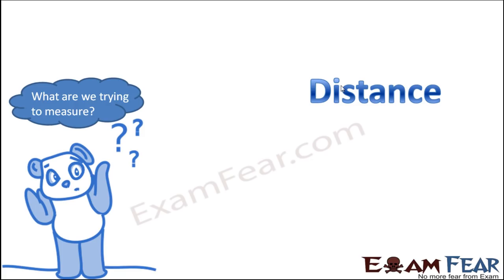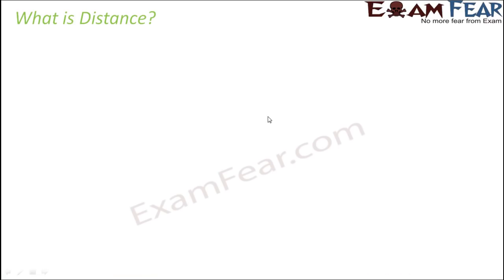So now the question is what are we trying to measure? We are trying to measure length, and this length of the road is what is more popularly known as distance. So we are basically trying to measure distance. When I say that the girl is cycling from her home to her school, she is covering some length of the road. That length of the road is nothing but the distance between her home and her school. So let's see how do we define distance?